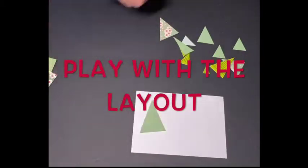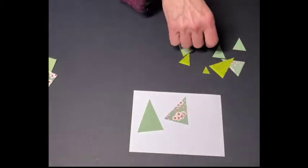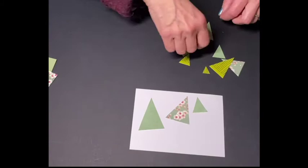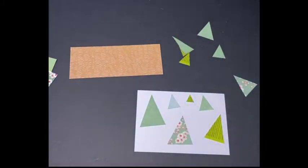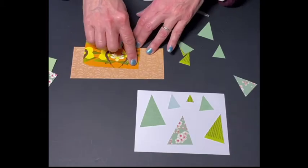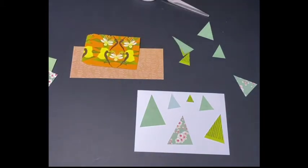So when you're coming to make your composition, you can play with the layout. Just place them on your card, move them around, put smaller ones in the distance and then choose the contrasting colour cards or papers to use as well to add a little bit more detail.